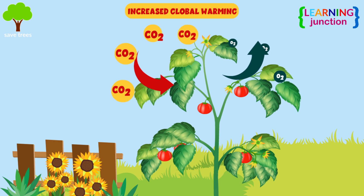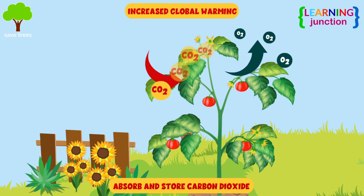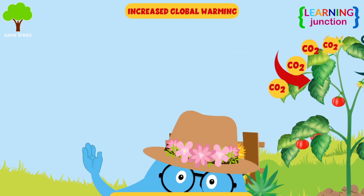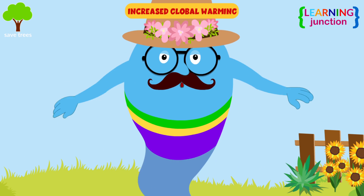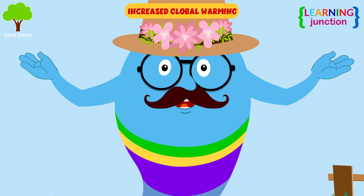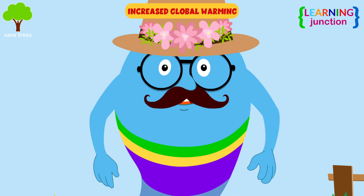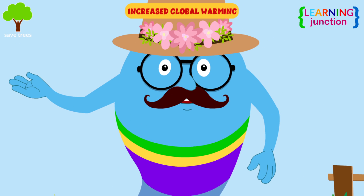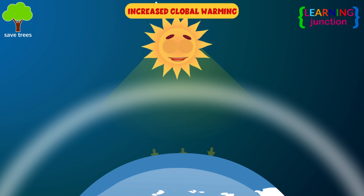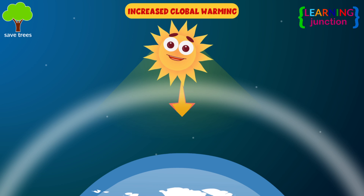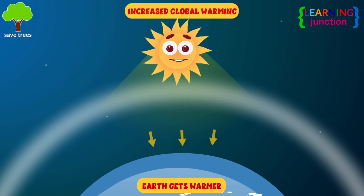Increased global warming. Trees absorb and store carbon dioxide. If forests are cleared or even disturbed, they release carbon dioxide and other greenhouse gases. If the atmosphere contains too much greenhouse effect, Earth just gets warmer and warmer.